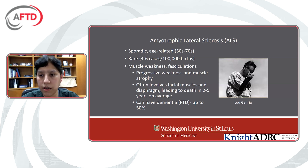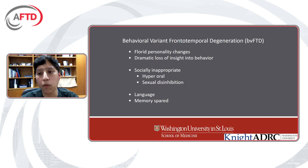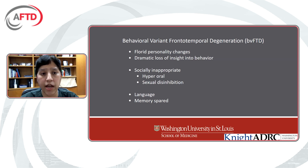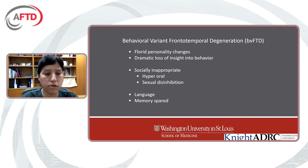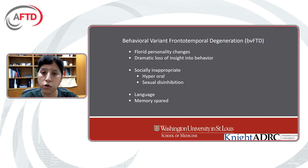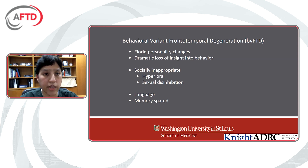Moving on to behavioral variant frontotemporal degeneration — bvFTD for short. These are folks with frontal lobe difficulties, so the filter is an issue. They have florid personality changes — this isn't just someone changing as a course of aging. They are fundamentally different in their interactions with the people around them, and they don't seem to see it, so they have dramatic loss of insight. They tend to be socially inappropriate. Recall that the frontal lobe is how we interact with the outside world and regulate our appropriate and inappropriate behaviors. They can have some language difficulties, but notably, since this is a frontal lobe predominant scenario, they're not often having memory issues early on.